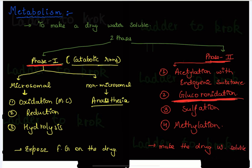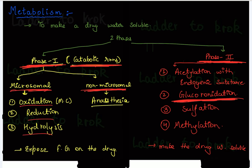In phase two most of the reactions are anabolic — we do not use the term catabolic here. In phase one there are microsomal and non-microsomal enzymes. By microsomal enzymes we do oxidation, reduction, and hydrolysis. By non-microsomal enzymes there is one reaction like anesthesia for example.